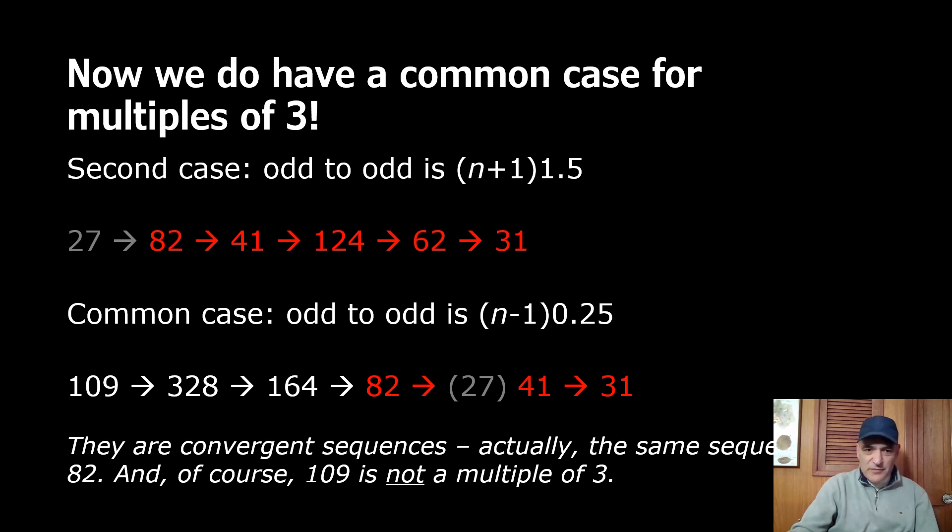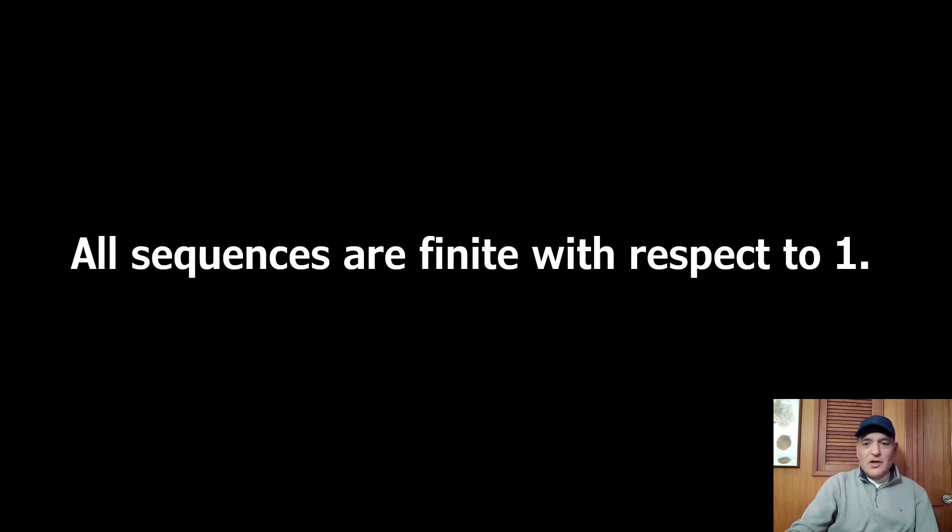That's beautiful. They are convergent sequences, actually the same sequence beginning with 82. And of course 109 is not a multiple of three. This takes us to the definitive statement that all sequences are finite with respect to one, including those that begin with multiples of three.